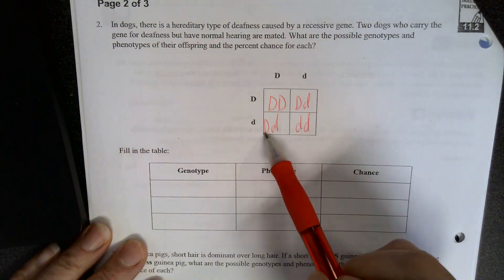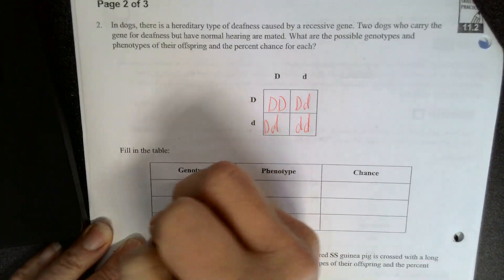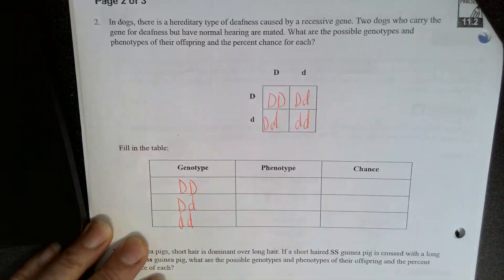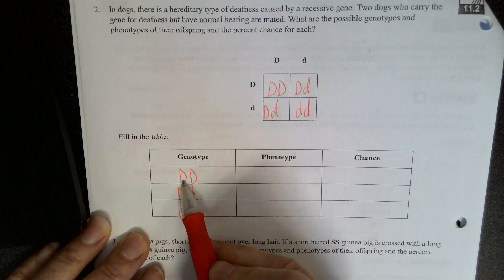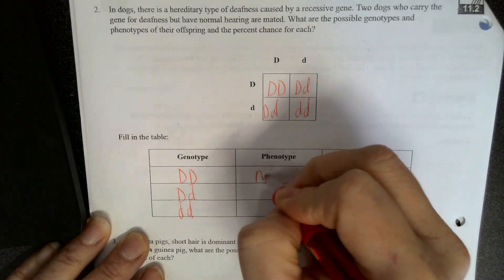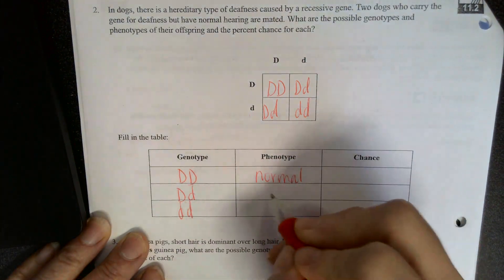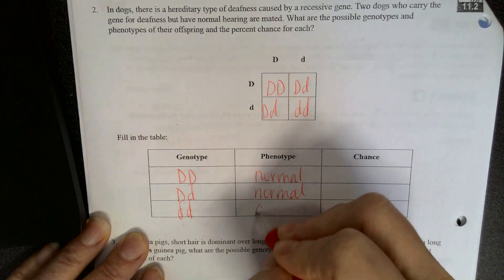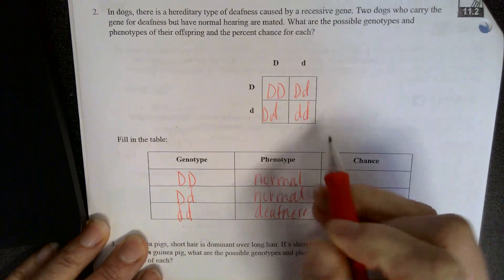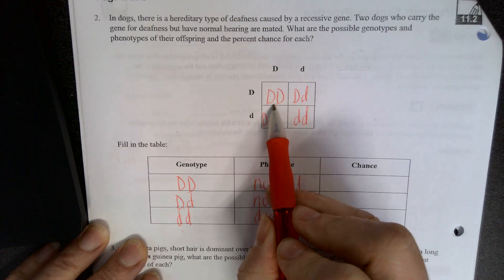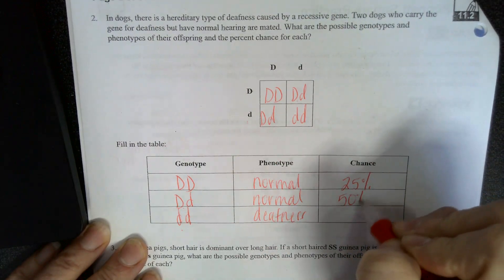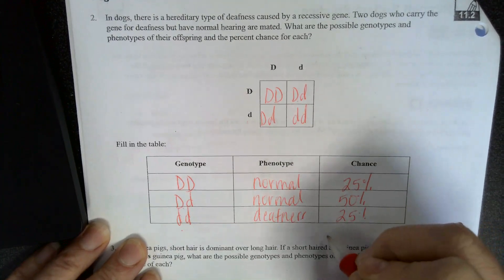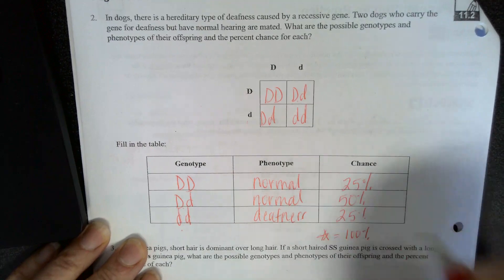notice that this time we have three possible genotypes. We have big D, big D, big D, little d, and little, little. So what does this mean? Is this normal or deafness? Normal hearing or deafness? Normal hearing is dominant. So this is going to be normal. This is also going to be normal because it has at least one dominant allele. And this is going to mean deafness. What are the chances? So big D, big D, what's the chance? That's one out of four, 25%. Big D, little d, two out of four. And then little, little, all of these should always add up to 100%. That's one way that you can check yourself.